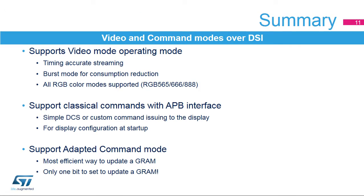The DSI Host supports video mode operation with timing-accurate streaming, burst mode to reduce consumption during blanking periods, and several RGB color encoding formats to optimize bandwidth usage. It also supports commands through its APB interface: DCS or generic commands can be issued to the display even when video mode is active, used for display configuration at startup and maintenance operations. Additionally, the DSI Host can use adapted command mode to update a display's graphics RAM without CPU or DMA involvement, working in conjunction with the LTDC to transmit write commands to the display.